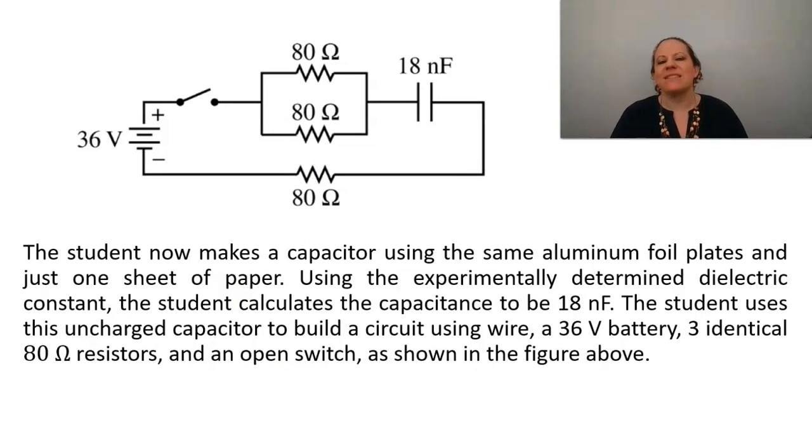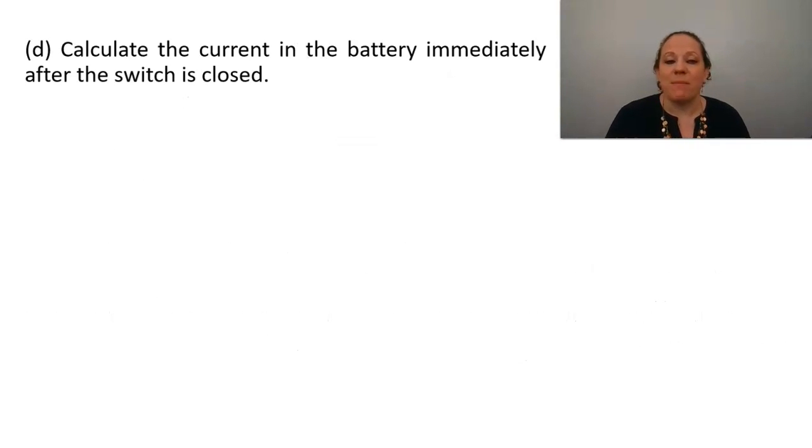The student now makes a capacitor using the same aluminum foil plates and just one sheet of paper using the experimentally determined dielectric constant the student calculates the capacitance to be 18 nanofarads the student uses this uncharged capacitor to build a circuit using wire a 36 volt battery three identical 80 ohm resistors and an open switch as shown in the figure above. Calculate the current in the battery immediately after the switch is closed. Well that sounds to me like an ohm's law business right.